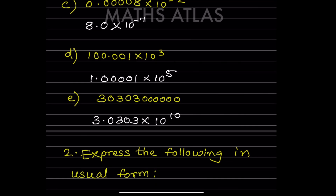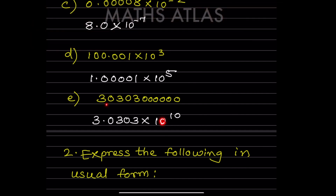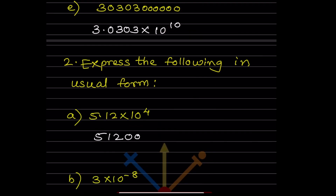For the next number, after the first digit the decimal is placed and remaining digits are written as-is, giving 3.0303. When counting for the power of 10, we count all positions: 1, 2, 3, 4, 5, 6, 7, 8, 9, 10. So the answer is 3.0303 × 10^10.